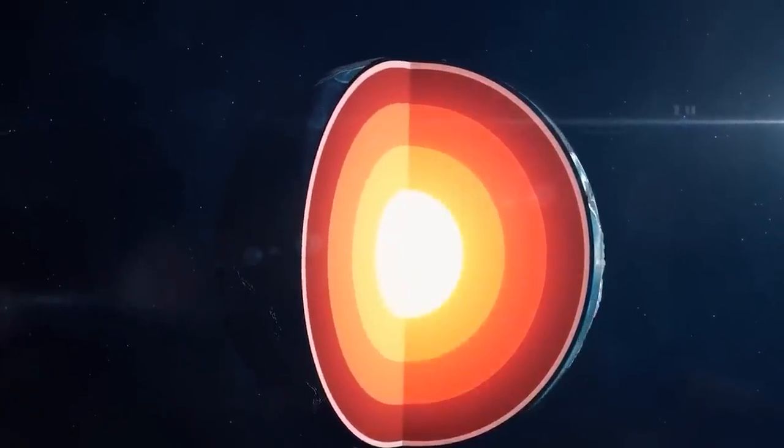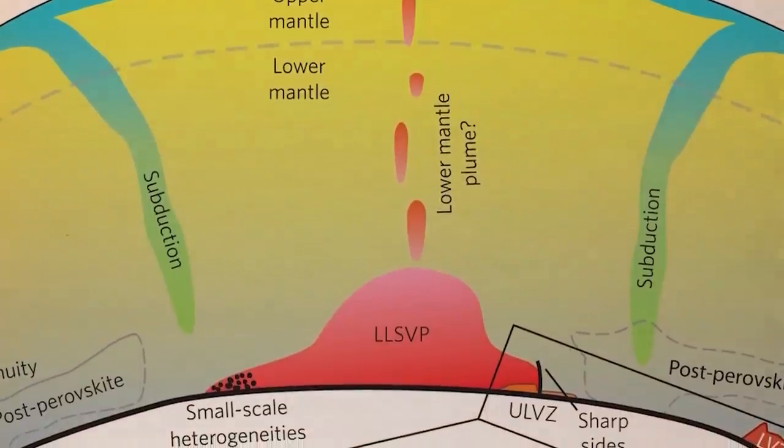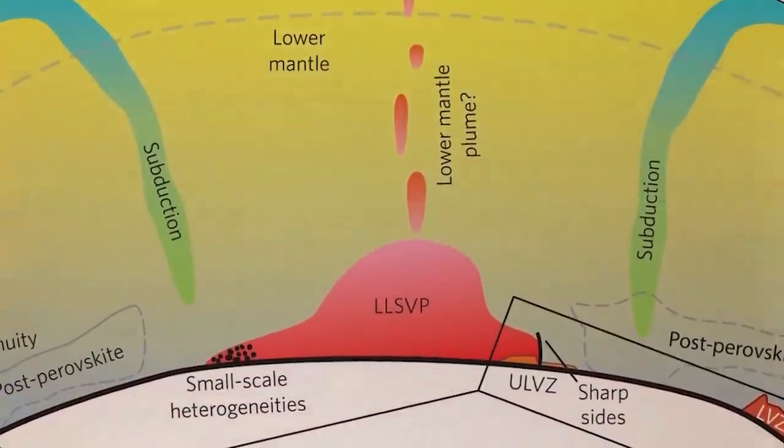The mantle is a vast, slowly moving region of rock. At the base of the mantle, near the outer core's boundary, lie mysterious LLSVPs. Two prominent ones, the African LLSVP under Africa and the Pacific LLSVP under the Pacific Ocean, impact mantle processes like convection and plate movement.